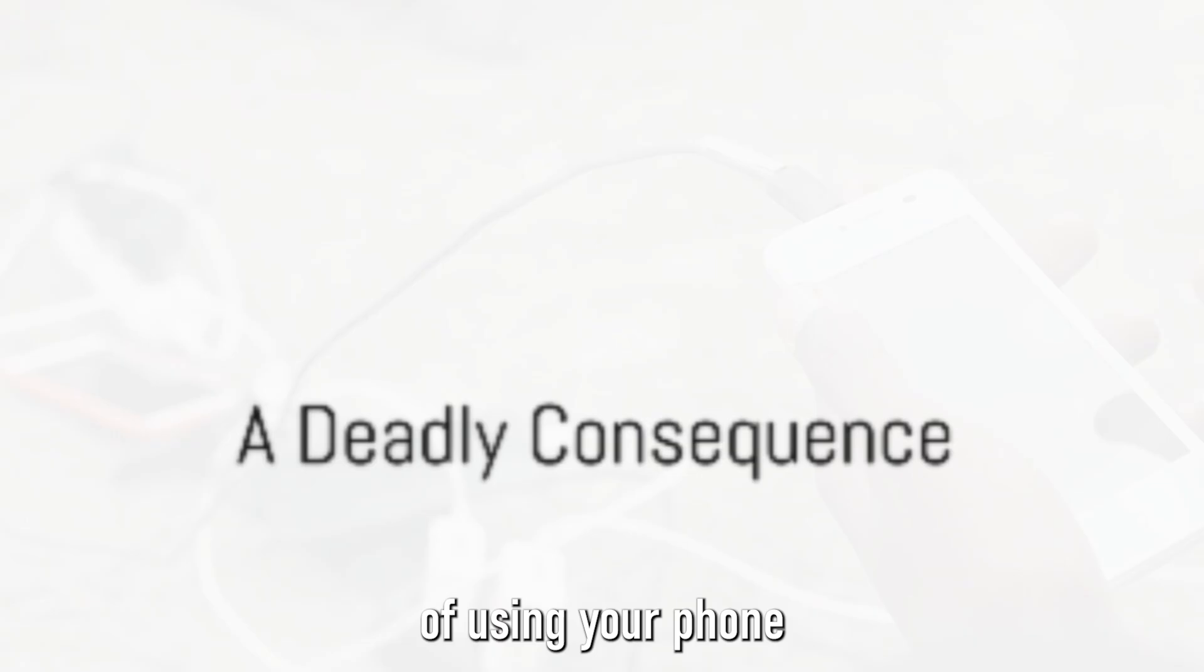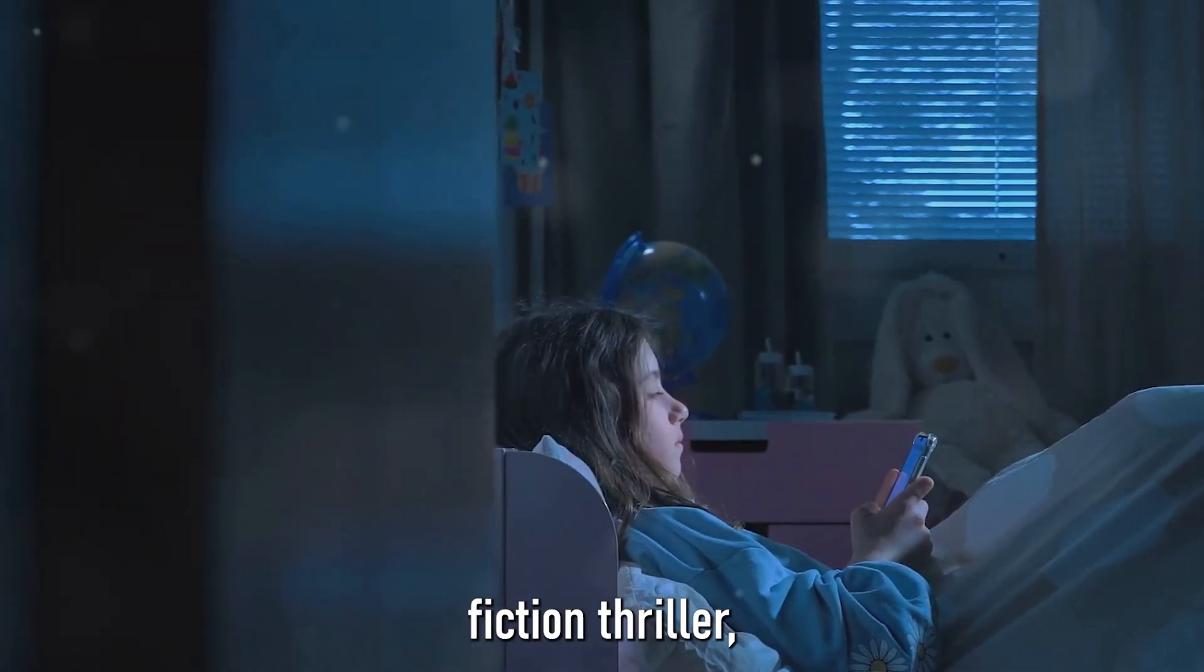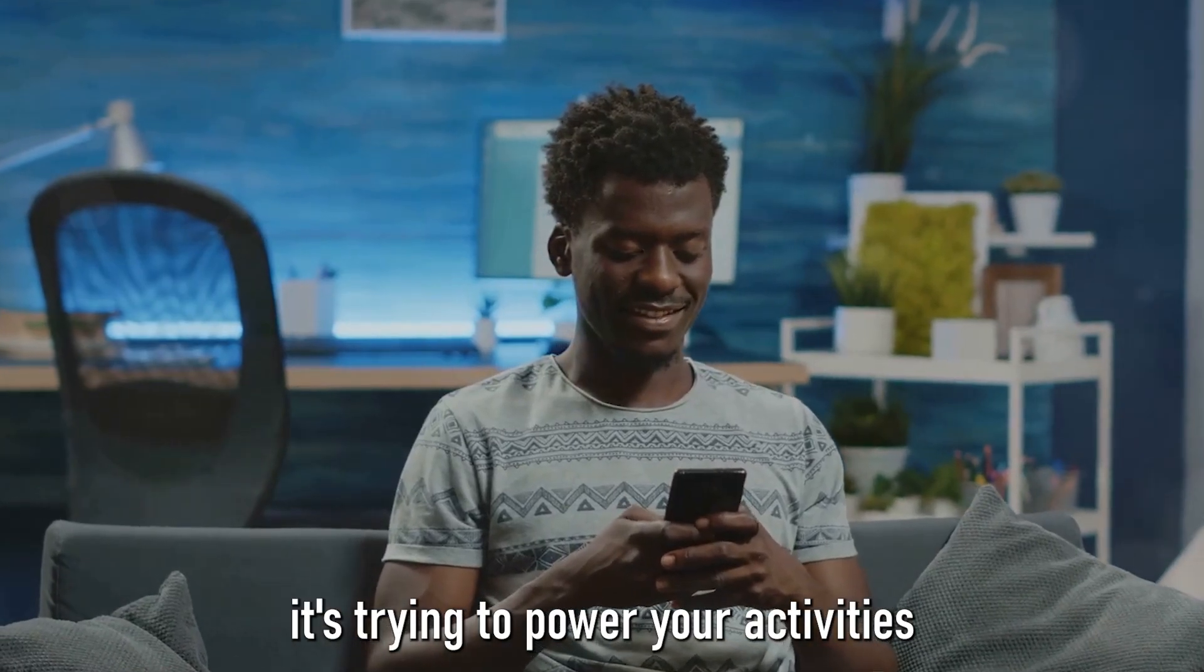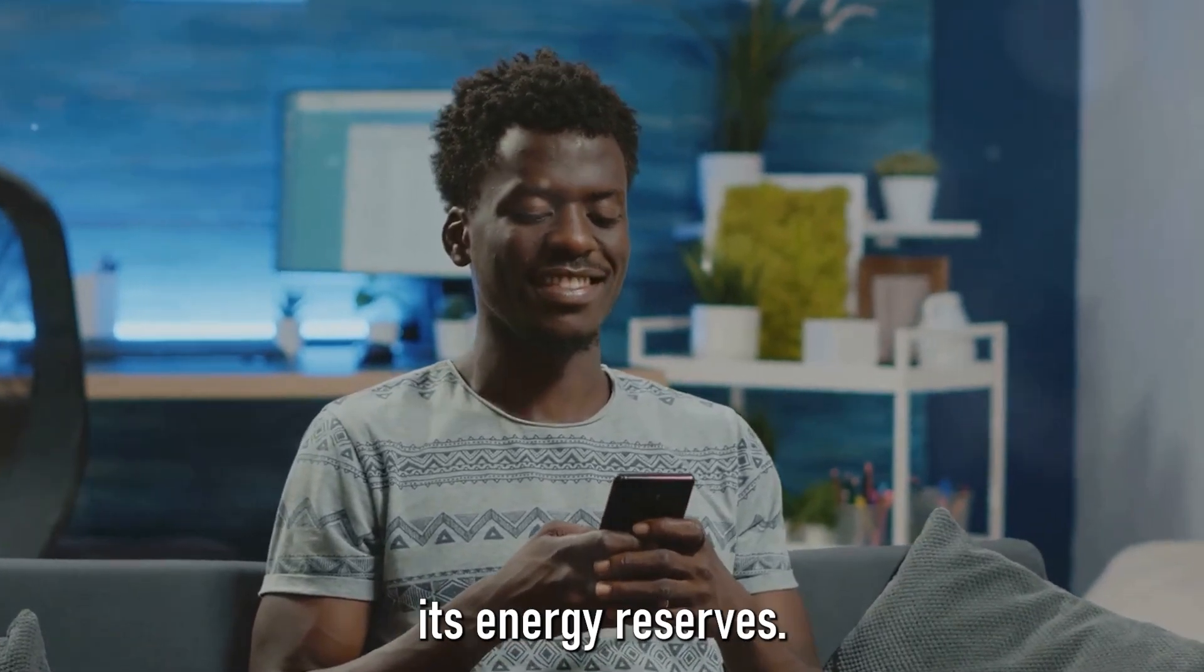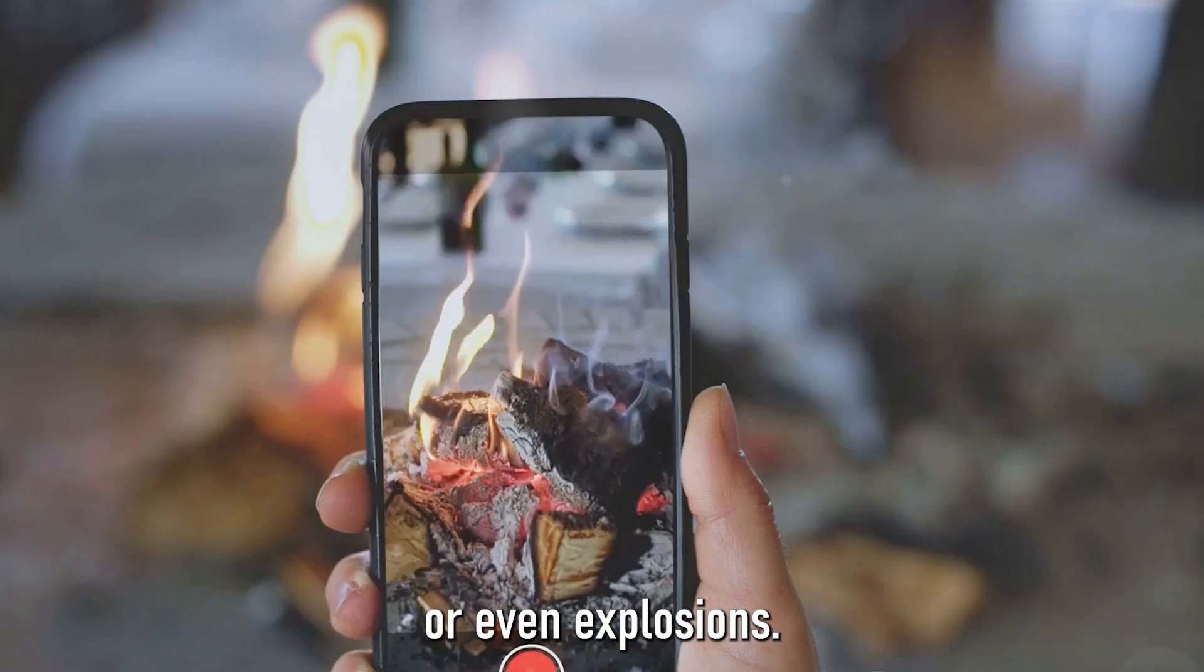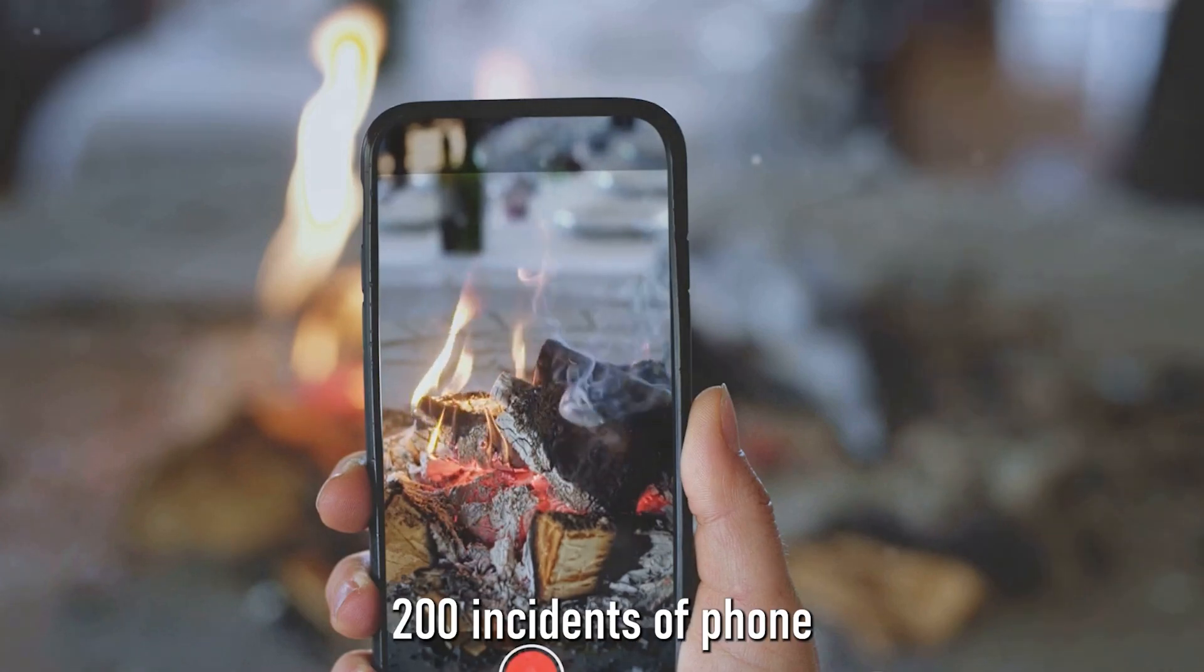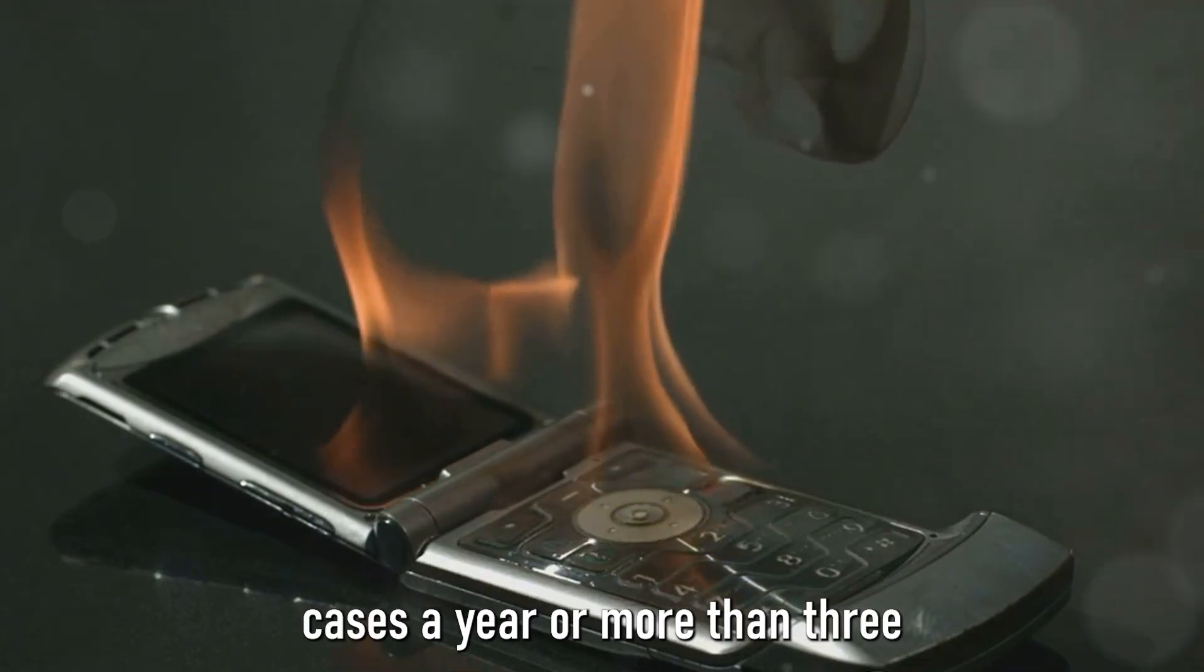Perhaps the most alarming danger of using your phone while charging is the potential fire risks. This might sound like a plot straight out of a science fiction thriller, but unfortunately it's a reality that's all too common. When you use your phone while it's charging, the device is working overtime. It's trying to power your activities, from scrolling through social media to watching videos, while also replenishing its energy reserves. This dual task can cause the device to overheat, increasing the risk of fires or even explosions. Now, let's bring some numbers into the mix to illustrate the gravity of the situation. In the United States alone, there have been reports of over 200 incidents of phone-related fires in the past five years. That's an average of 40 cases a year or more than three every month. These aren't small numbers, and each one represents a potentially life-threatening situation.